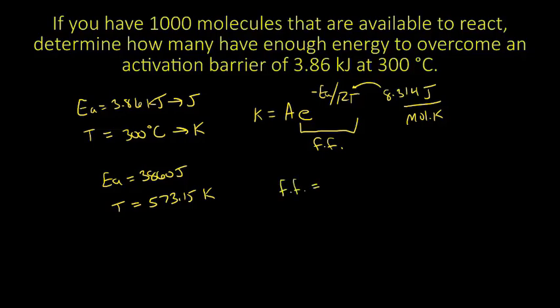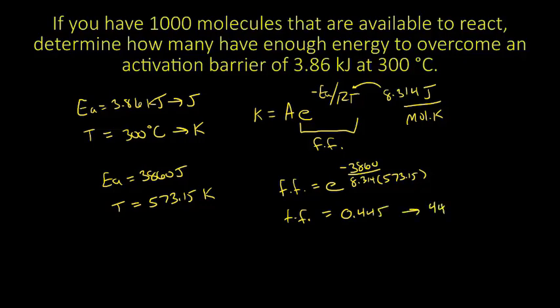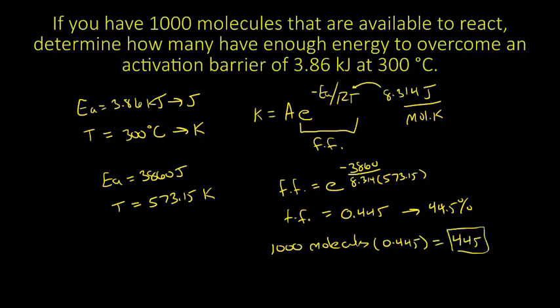Now we calculate our fraction factor. This equals e to the negative activation energy — so minus 3,860 — divided by R, which is 8.314, times the temperature, which is 573.15. Our fraction factor ends up being 0.445, which means that 44.5% of our molecules have enough energy to react. With 1,000 molecules, that is 445 molecules.